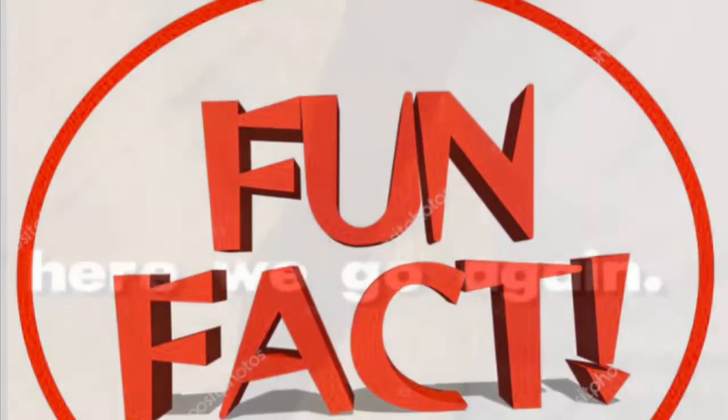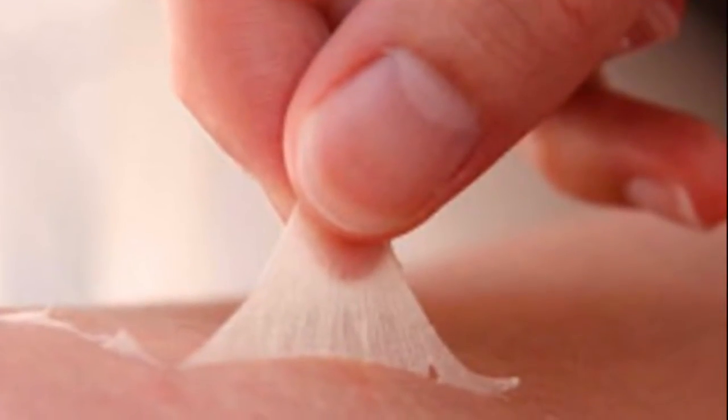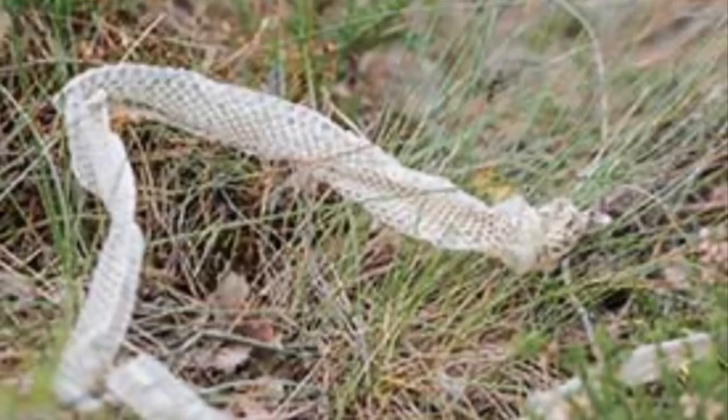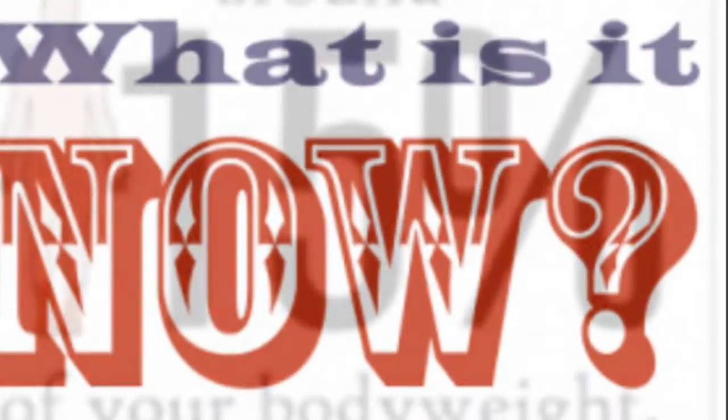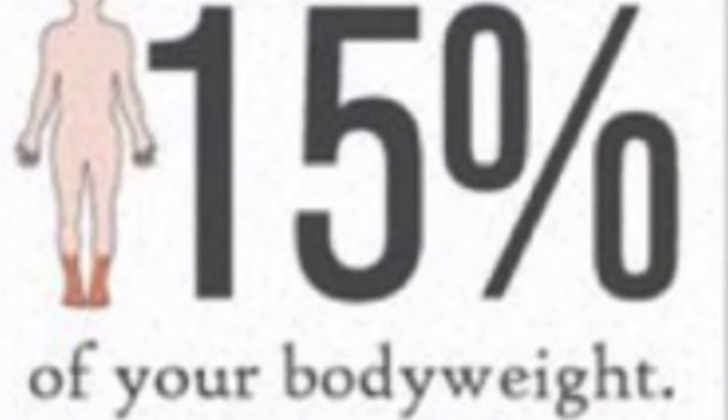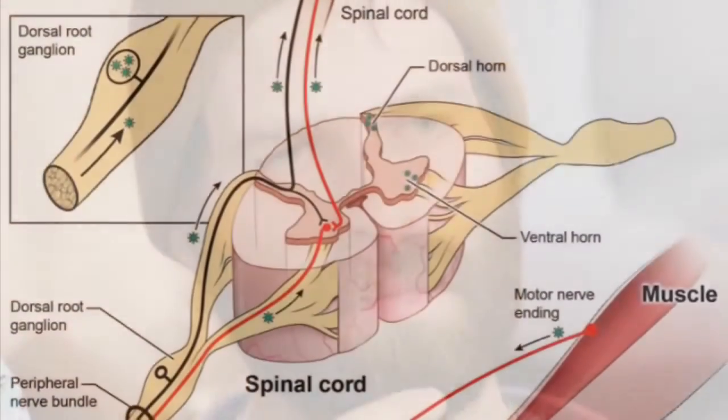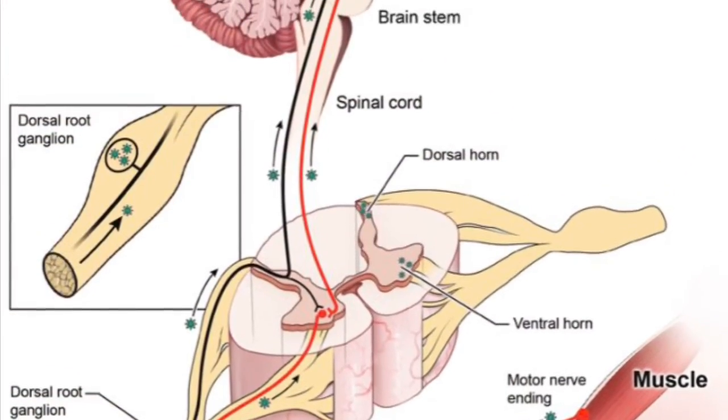Now for some fun facts about the integumentary system. Did you know that every month you have a whole new layer of skin? The fact that we shed 40 pounds of skin in a lifetime is just shocking. The skin also accounts for about 15% of your body's weight.